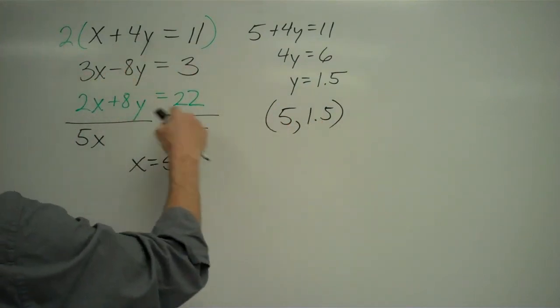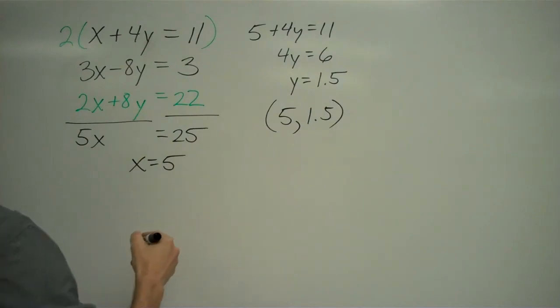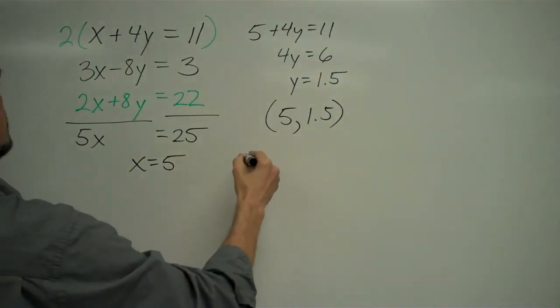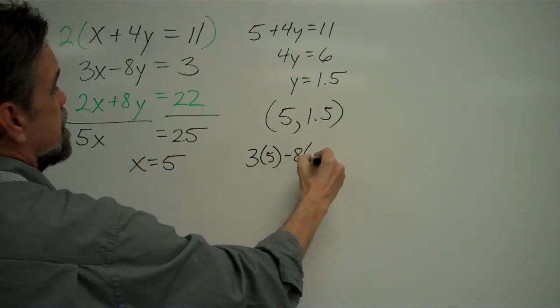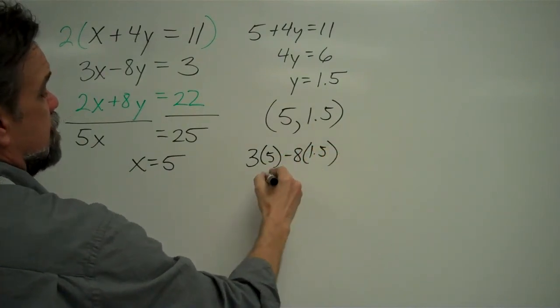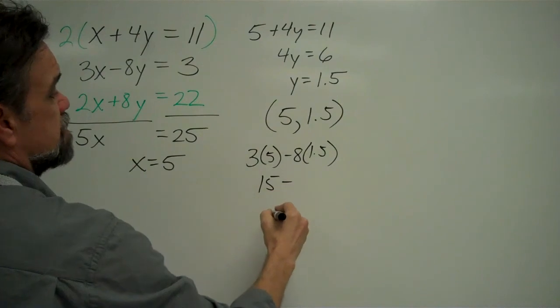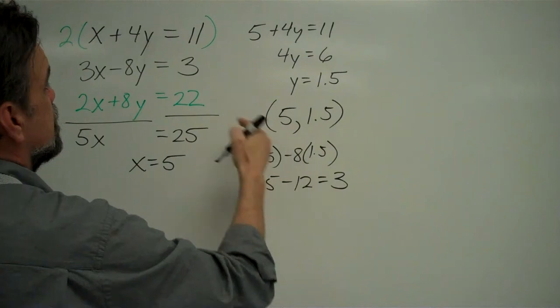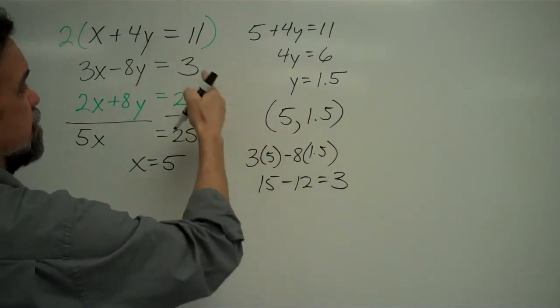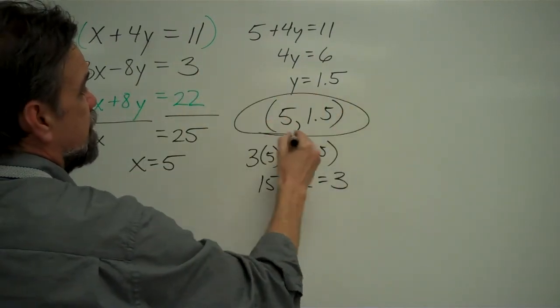Just to make absolutely sure that I'm right, I'm going to take this and substitute x for 5 and y for 1.5. Let's see, I'm going to get 3 times 5 minus 8 times 1.5, which is 15 minus 12, and that gets me 3. Yep, just what I wanted. So now I'm very confident of my answer.